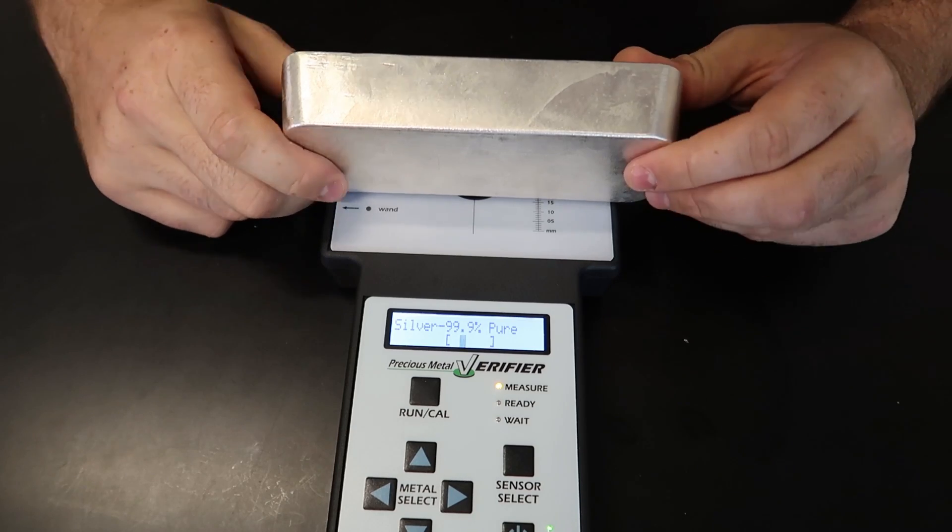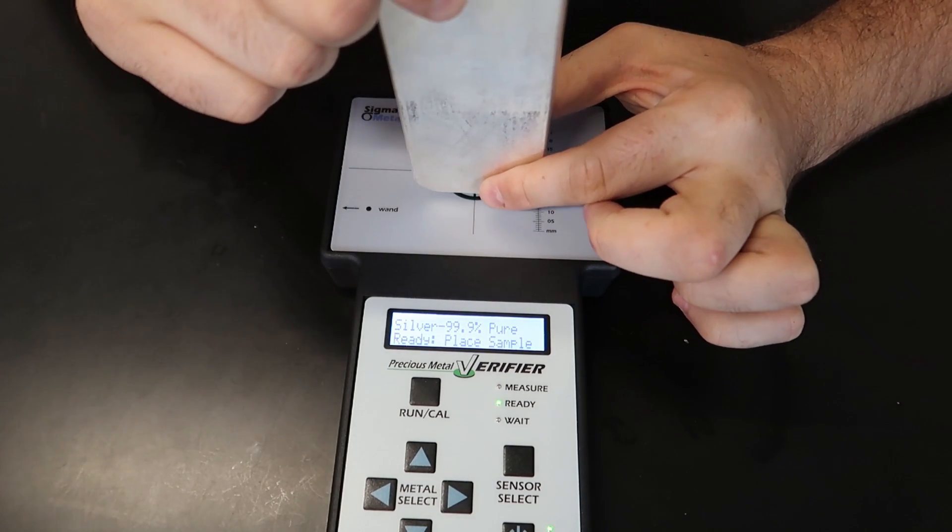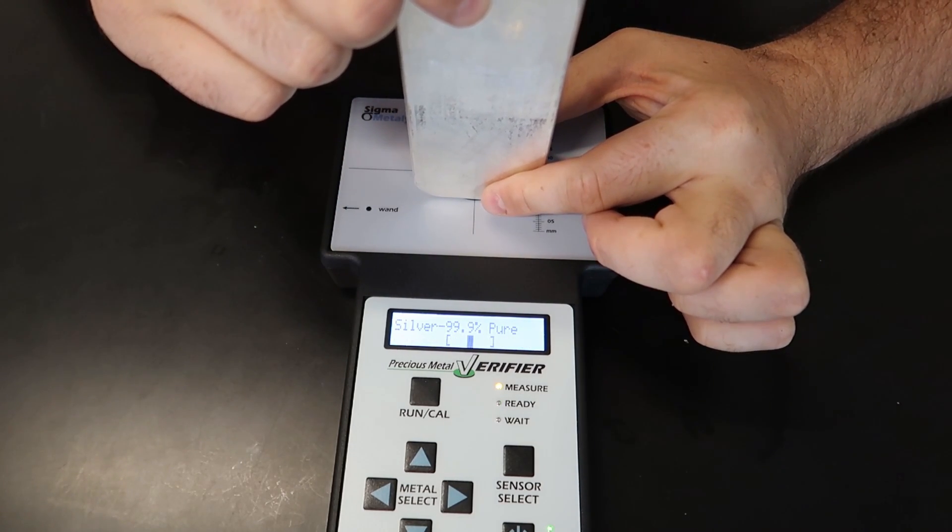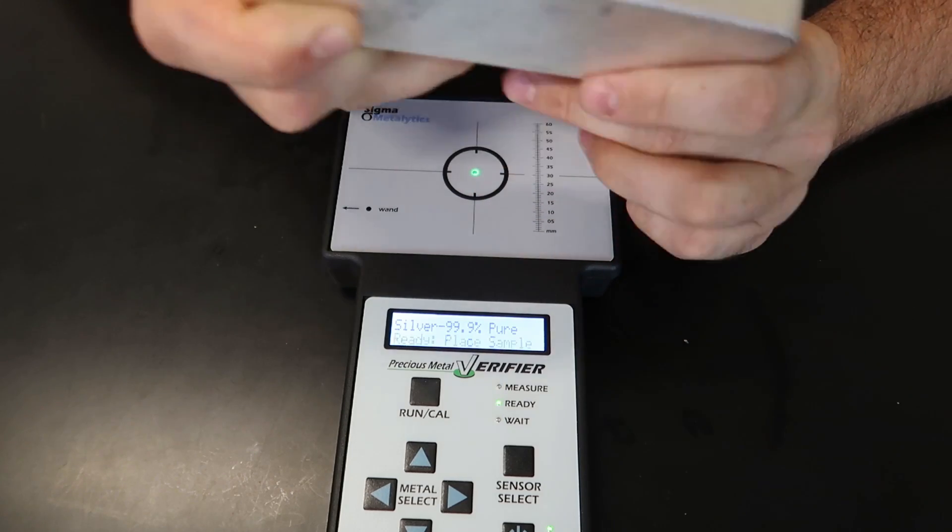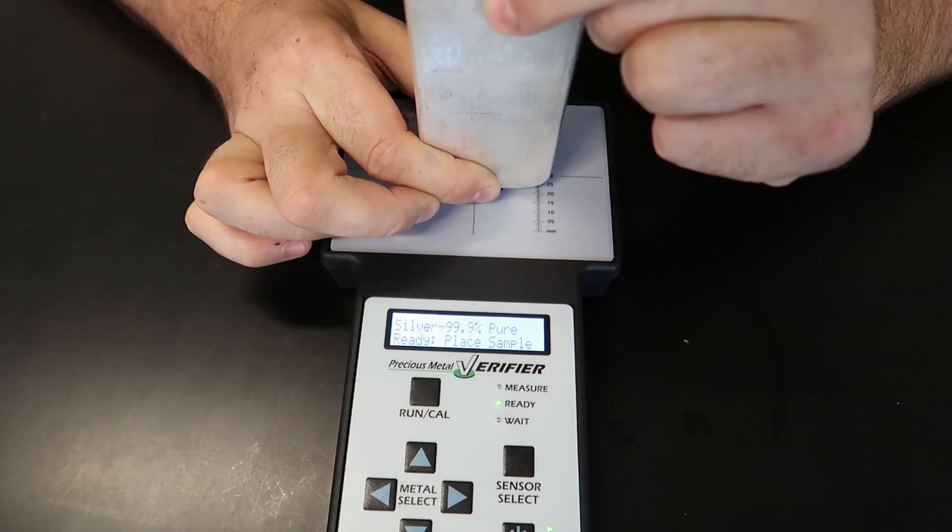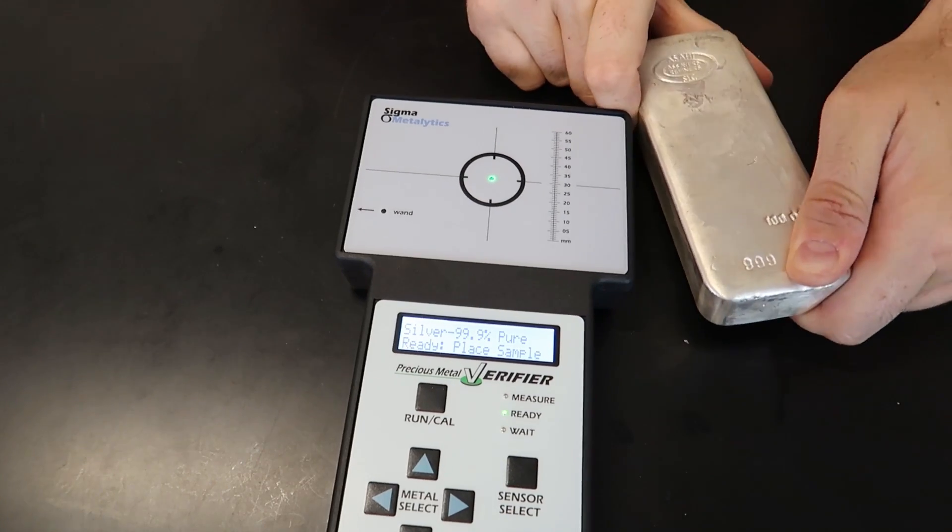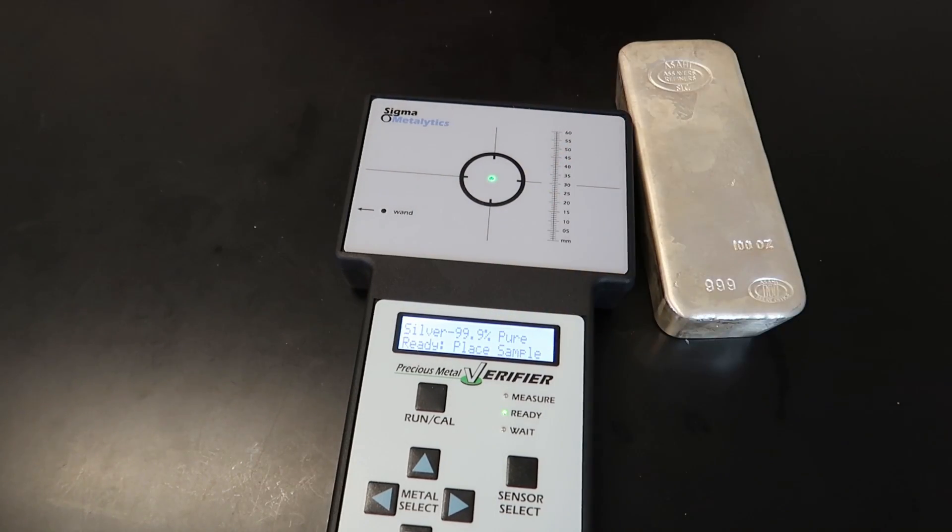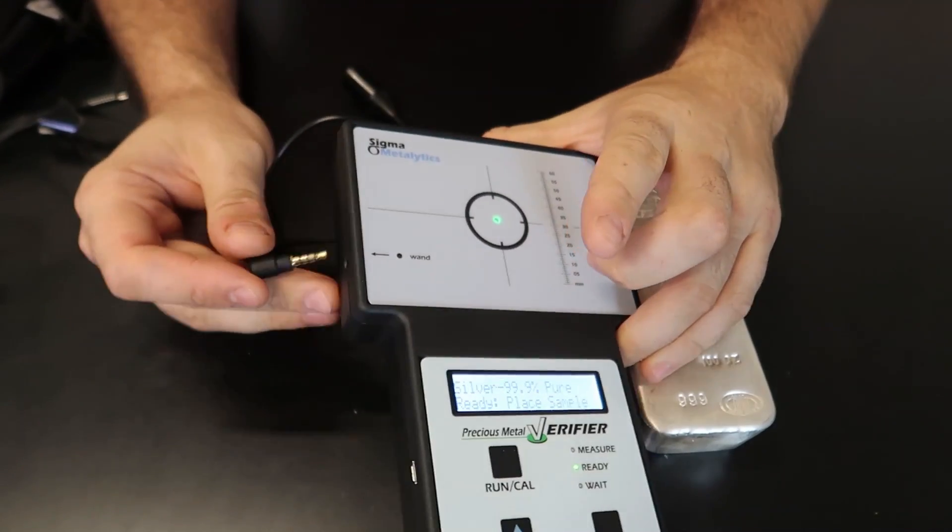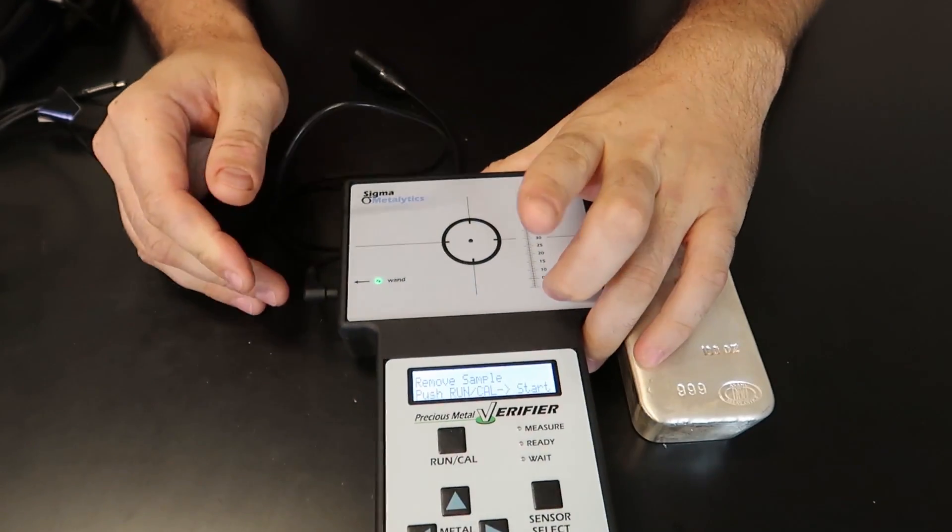And that bar is so big, we can test every single corner. Look, right in the middle. Just to make sure, right? You kind of don't want to press too hard because it might squish the tester, so you might want to bring out the wand. But yeah, it's 100% silver, testing right in the middle.